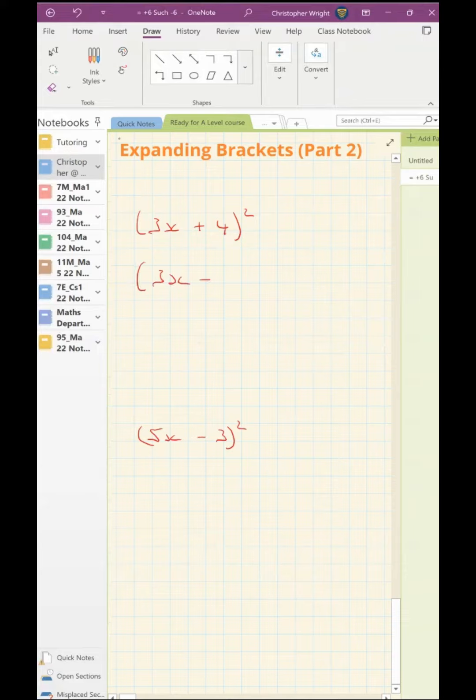3x plus 4 squared means 3x plus 4 times 3x plus 4. So I'm going to get 9x squared. My nose is going to give me 12x, and my mouth is going to give me the same. So I'm going to have 24x plus 16 at the end.